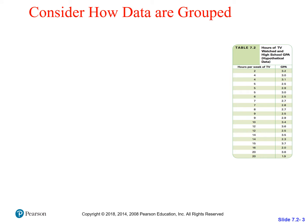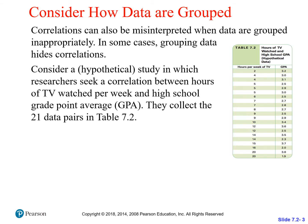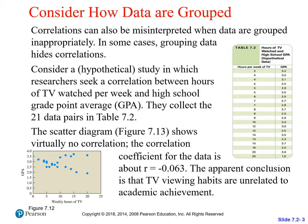Grouping data is another thing that can play an effect. For example, we have hours watched per week of TV and GPA. If we were to do a correlation coefficient, we would get some interesting results. When we plot the data, it looks like there's just no correlation whatsoever between GPA and hours of TV watched every week.